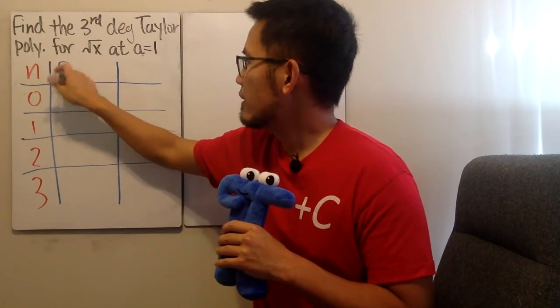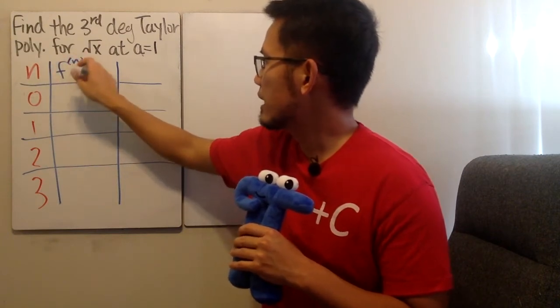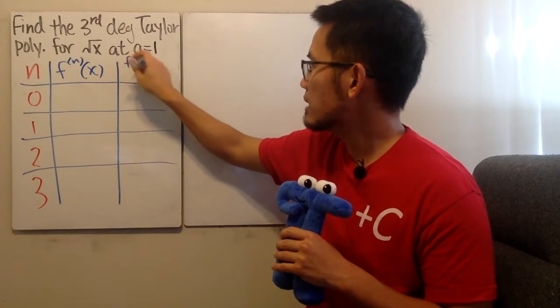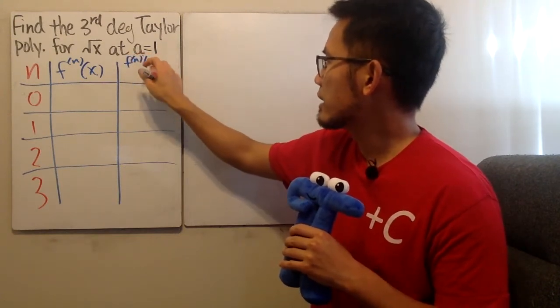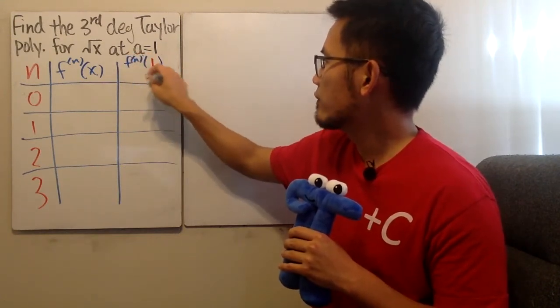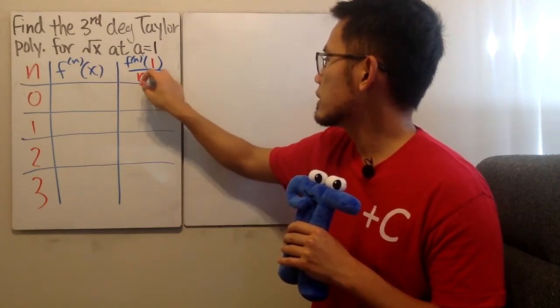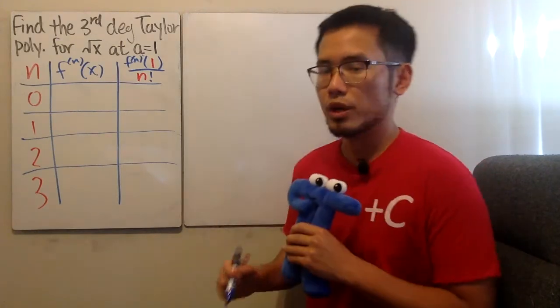Anyway, let's write down f with the n, and then the x. And here, let's write down the Taylor formula. And the a, the center, is 1. And we divide it by n factorial. So, this is what we have. Alright, let's get to work.